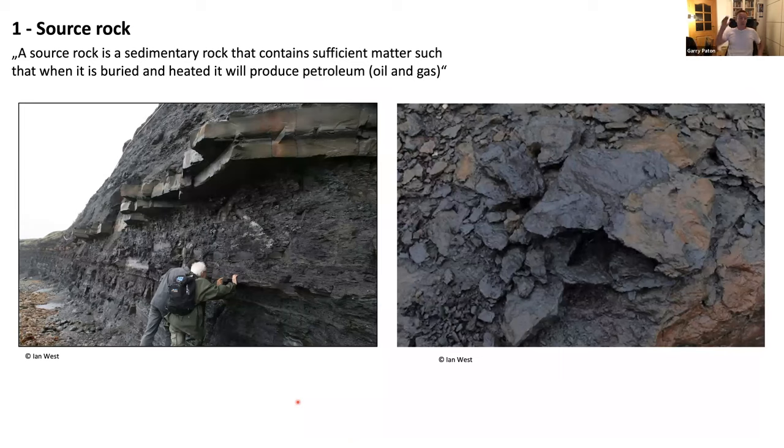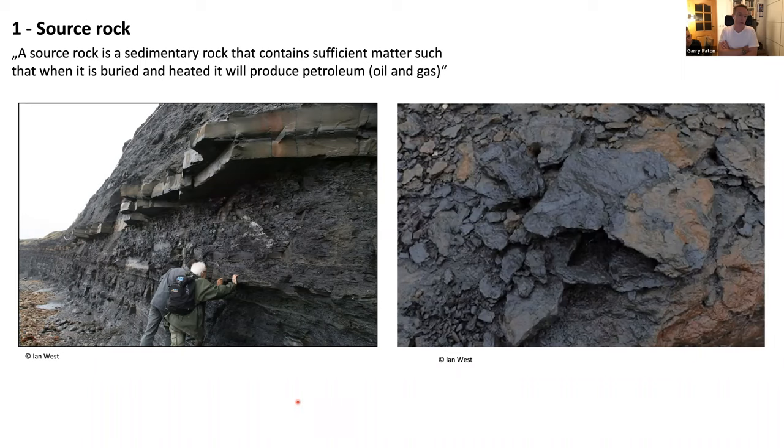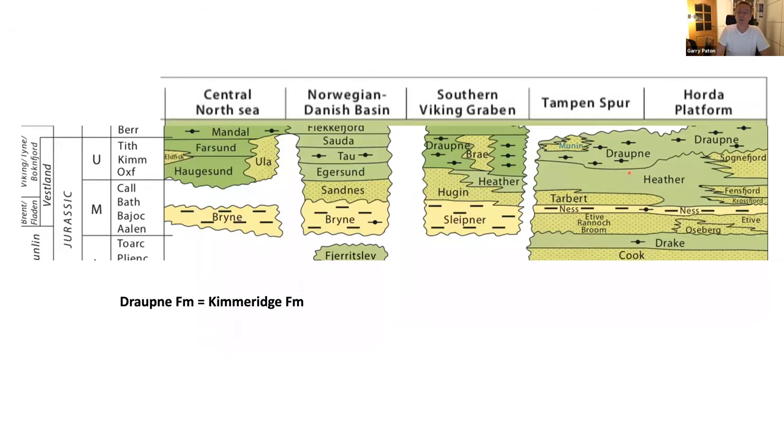Let's start with the source rock. If anybody's been down to Kimmeridge Bay on the Dorset coast, you would have visited the Kimmeridge Formation. It's a fantastic place to go. It's organic rich. If you try hard enough, you can set fire to this stuff. It's absolutely bituminous, full of oil. I think there's still a nodding donkey that produces a number of barrels per day. It's a source rock, and this is basically what you have in the North Sea. This is a major source rock. It's called the Draup in Norwegian stratigraphy, effectively the same formation interval. It extends across the entire Central North Sea area.